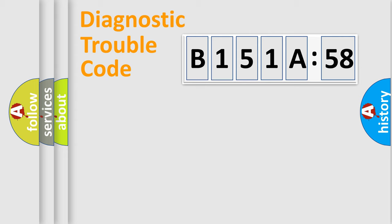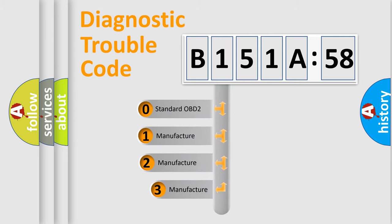Powertrain, Body, Chassis, Network. This distribution is defined in the first character code.